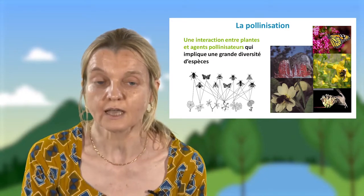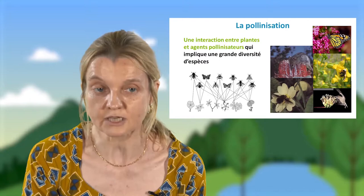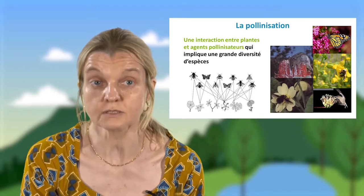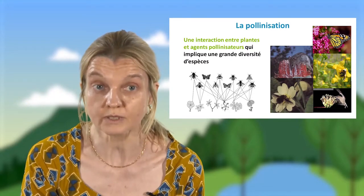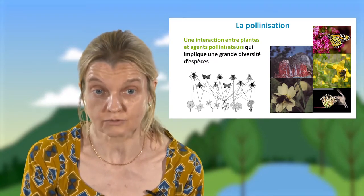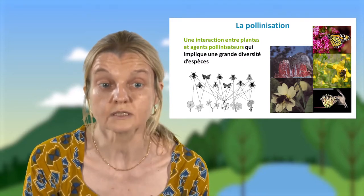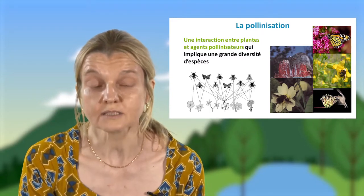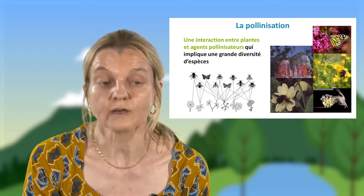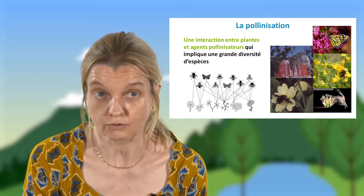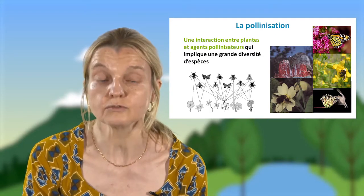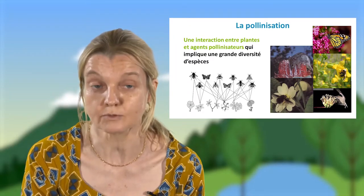On va tout d'abord se focaliser sur cette interaction au niveau épigé de la prairie, donc au niveau supérieur des plantes qui interagissent avec leurs agents pollinisateurs. C'est une interaction omniprésente chez les espèces de plantes à fleurs, puisqu'on estime que plus de 90% des plantes à fleurs sont pollinisées par des animaux. Il y a une très grande diversité d'organismes qui vont assurer cette pollinisation — ça peut être des mammifères comme cette petite souris, des papillons, des insectes, principalement en Europe occidentale. On va ainsi avoir des bénéfices réciproques pour les deux partenaires.